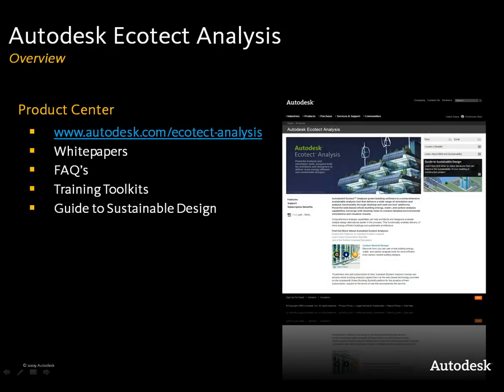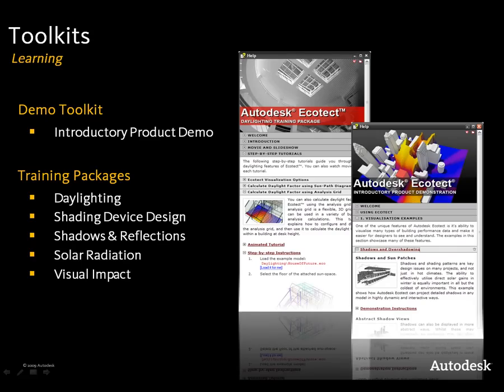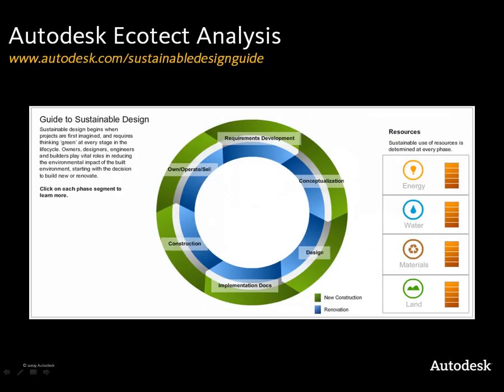We have a product centre available for Ecotect Analysis today. You can go there to download white papers and frequently asked questions. There are also training toolkits and a demo toolkit available for download and use with Ecotect Analysis 2010. The training packages will take you through some of the main areas of analysis that Ecotect is capable of, allowing you to get started very quickly. On that site we also have a guide to sustainable design, so you can understand the decisions that need to be taken at different stages of design and what Autodesk products can help you make those decisions.